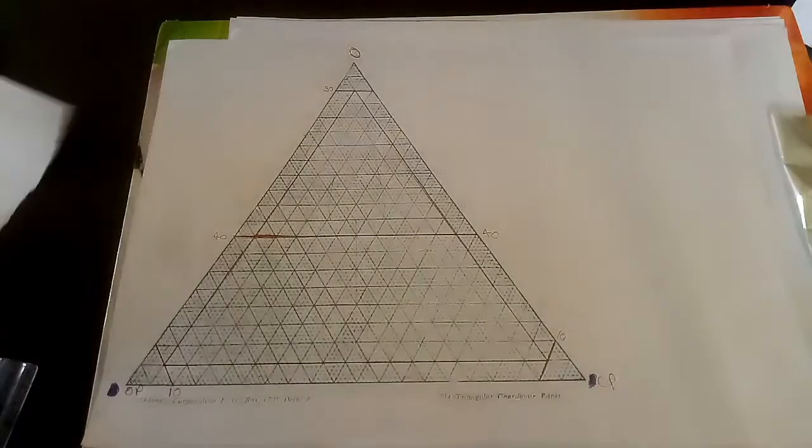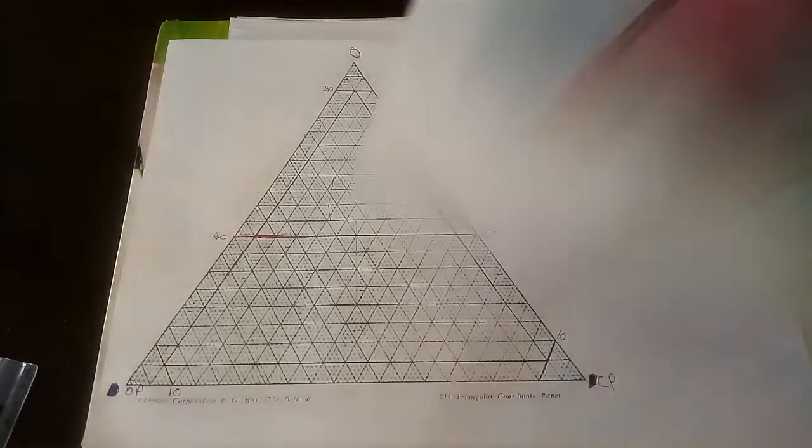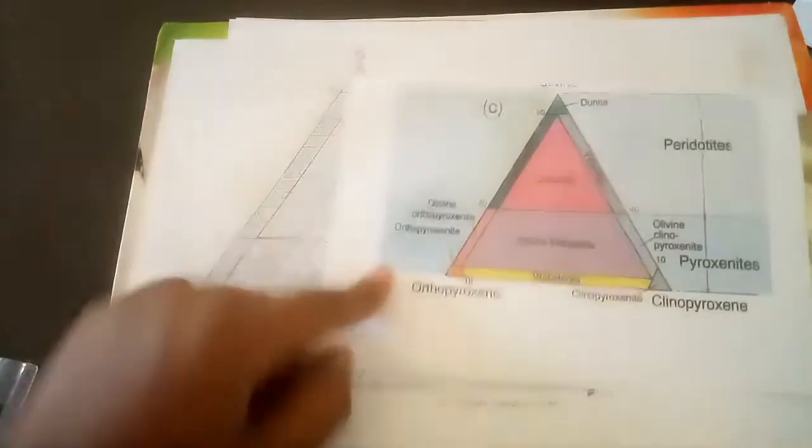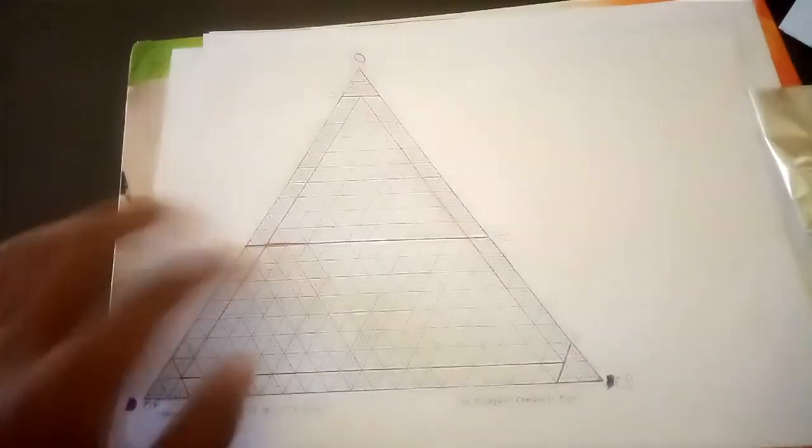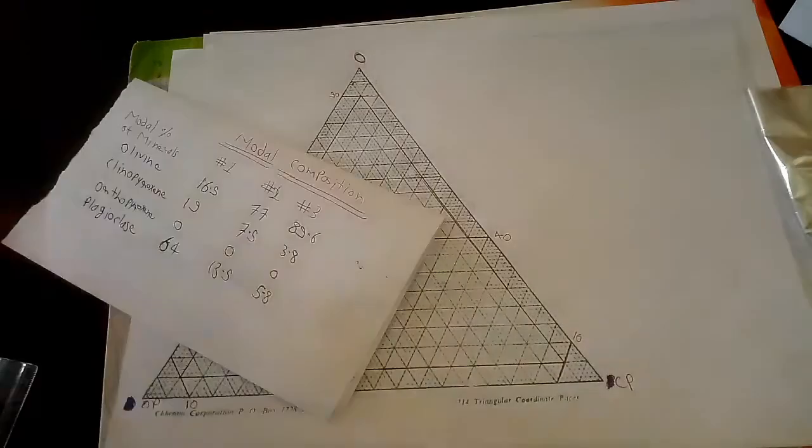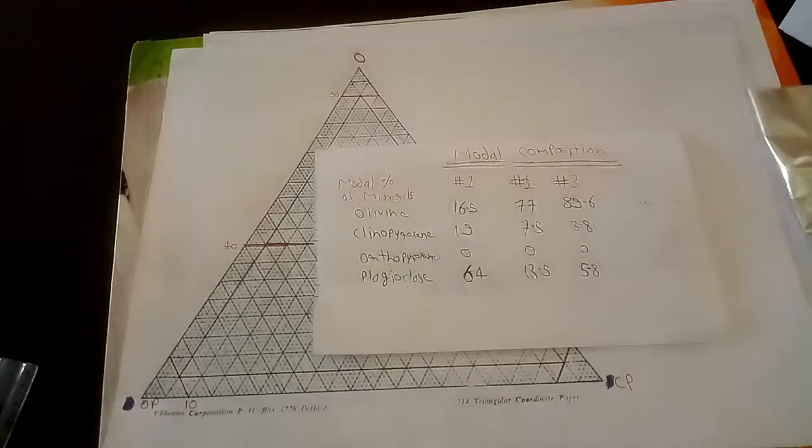In this video we will be solving a problem on IUGS classification diagram which is this one. I have drawn this. I have shown you in the last video how to draw it on the triangular graph. This is our modal composition. This type of modal composition will be given to you.